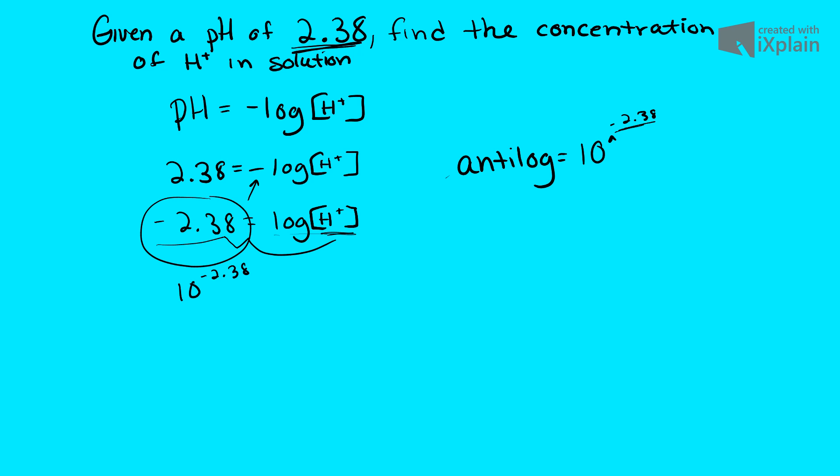Once we do that, once we type that into our calculator, we get concentration of H plus is equal to 4.17 times 10 to the negative 3rd.